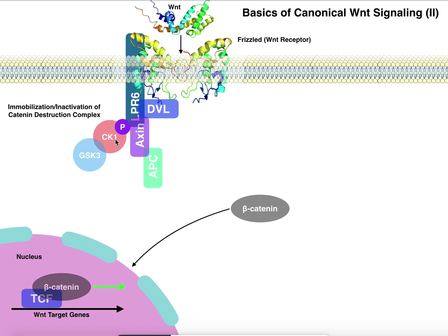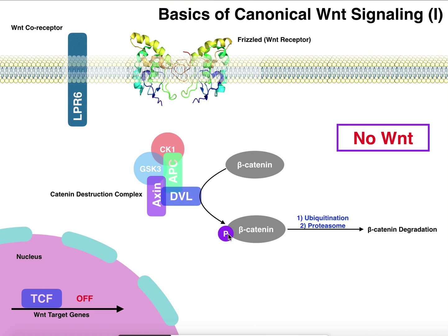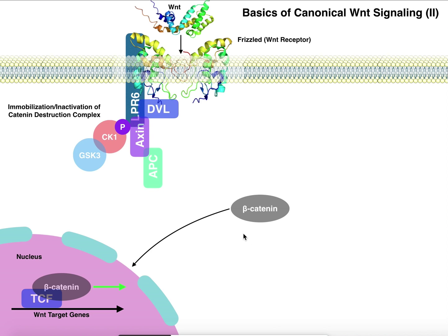Since these two enzymes can no longer phosphorylate beta-catenin, beta-catenin is not destroyed. Previously, phosphorylation by these two kinases led to its destruction — first by ubiquitination, then by the proteasome. But if beta-catenin is not phosphorylated, it's free to enter the nucleus and bind to the transcription factor TCF that's already there. When TCF is bound in conjunction with beta-catenin, that turns the transcription of Wnt target genes on, and that's how we get the downstream genetic effects of Wnt signaling.